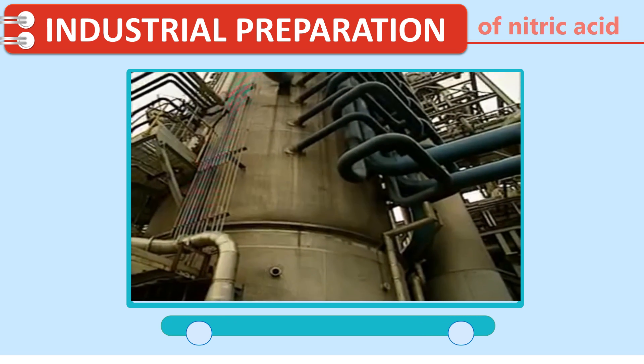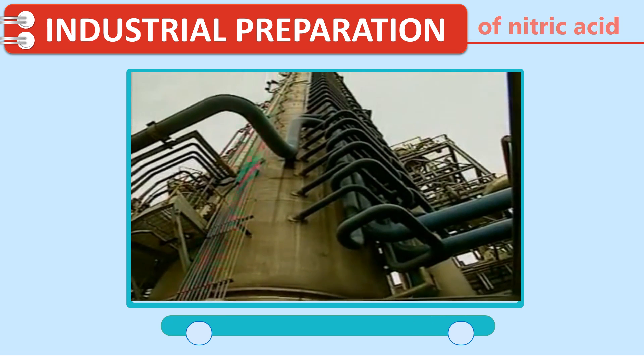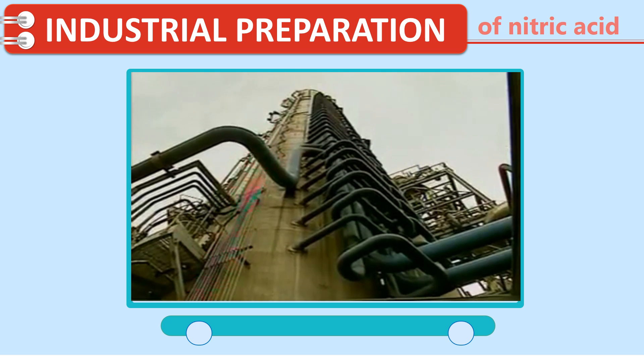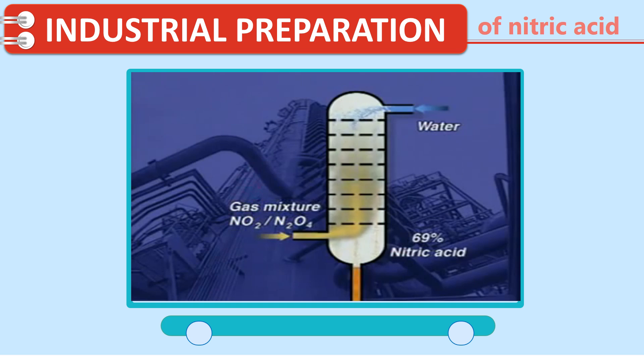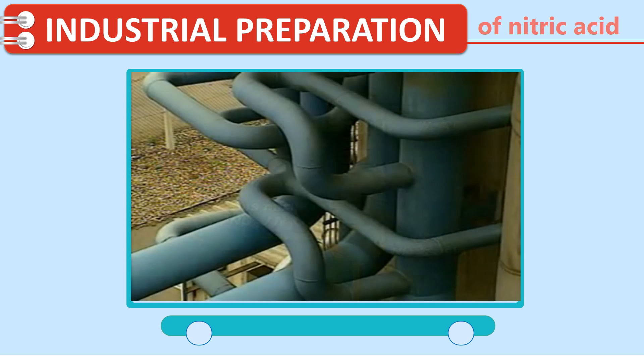The mixture passes to the base of the absorption tower. The gases rise up the tower and through a series of slotted trays. Water runs down the tower. A reaction occurs to produce an approximately 69% solution of nitric acid. This is the equation for the reaction.